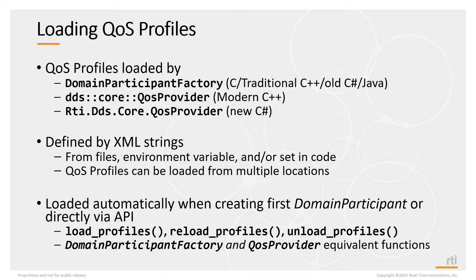There's also an unload profiles API. XML parsing takes up a lot of memory, and if you're only using QoS profiles to create objects at initialization time, you can tell DDS to free up this memory by unloading those XML profiles. The domain participant factory and the QoS provider are basically equivalent — it just depends on which language you're using.